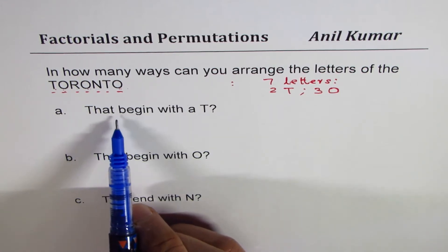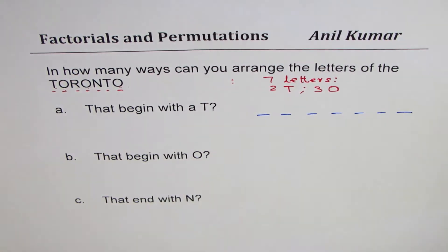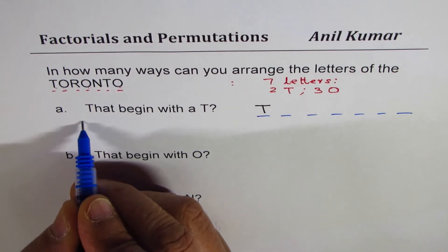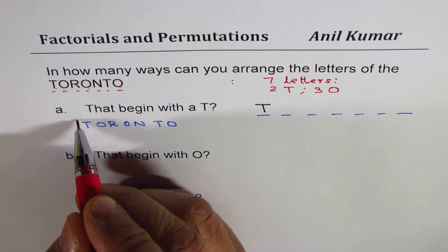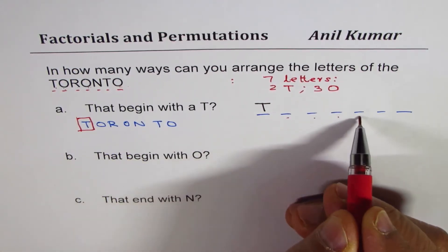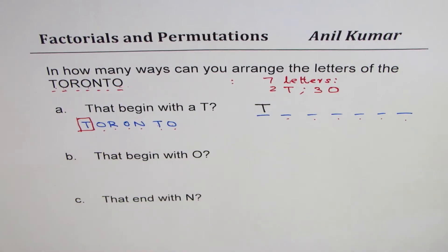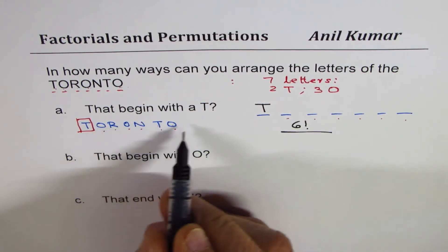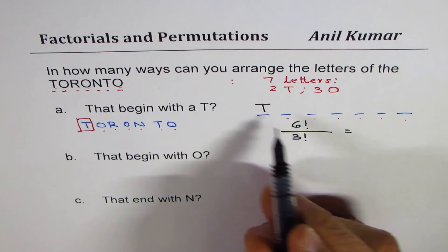The first condition is that the word begins with T. So we have seven places — one, two, three, four, five, six, seven — and if we fix T in the first position, we are left with six positions to fill using the remaining letters of Toronto. That gives us six factorial divided by how many are repeated. There are three O's, so we divide by three factorial. So six factorial by three factorial is the answer.